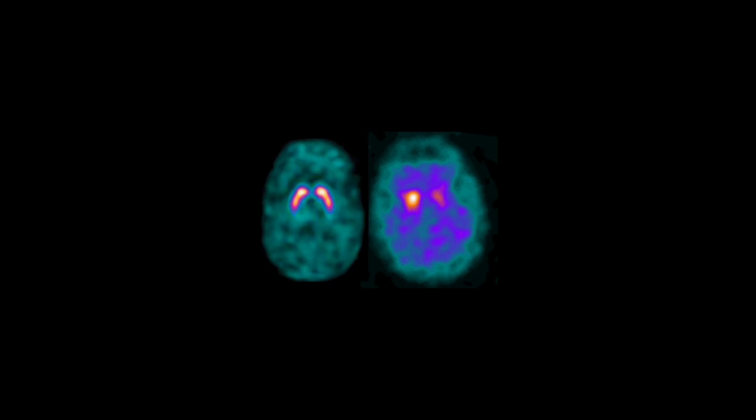Here's a picture of a normal DAT scan. You can see the caudate and putamen area light up as if they were commas. And here's a picture of our patient's brain.